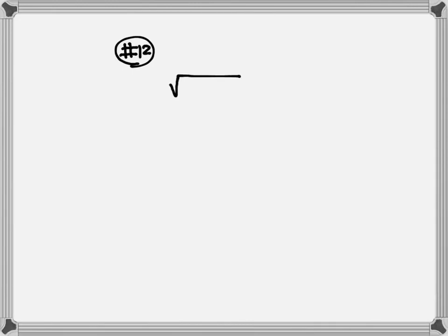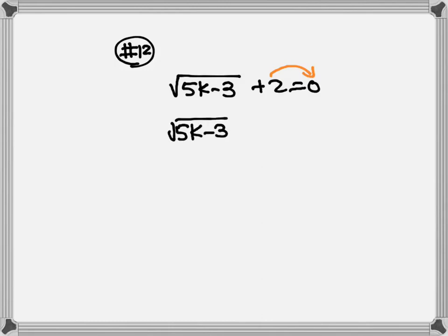Let's look at number 12. Here we have square root of 5k minus 3 plus 2 is equal to 0. Make sure the square root is on one side and the number on the other side. So, I'm going to move the 2 to the other side. This becomes: square root of 5k minus 3 is equal to negative 2.